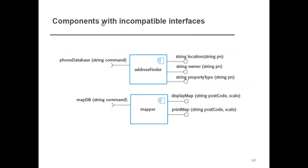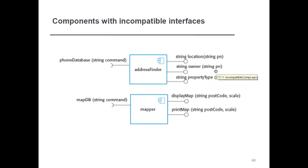Components with incompatible interfaces: for example, address finder is an operation mapper. I have a phone database function passing a string command, with string location, string pn, string owner, and string property type as parameters. When the parameter names are the same across components, there can be incompatibility regarding component integration and component interface.